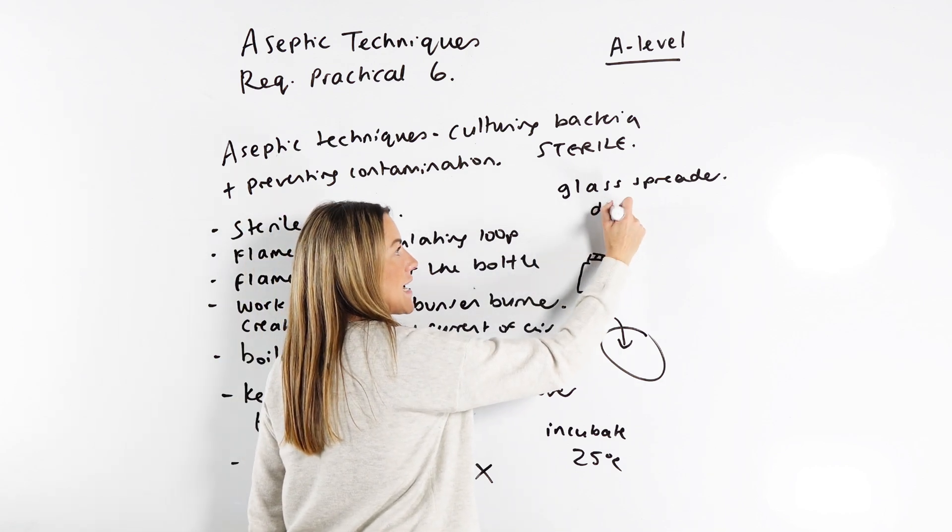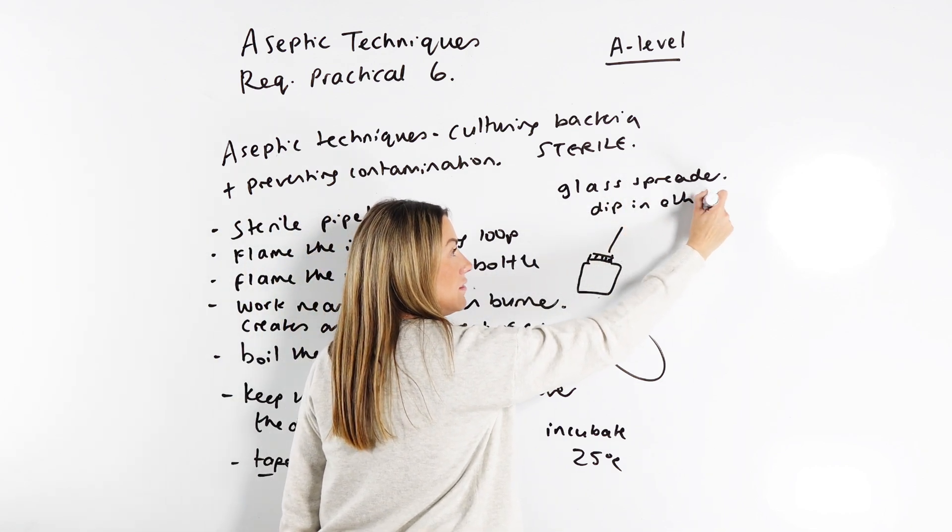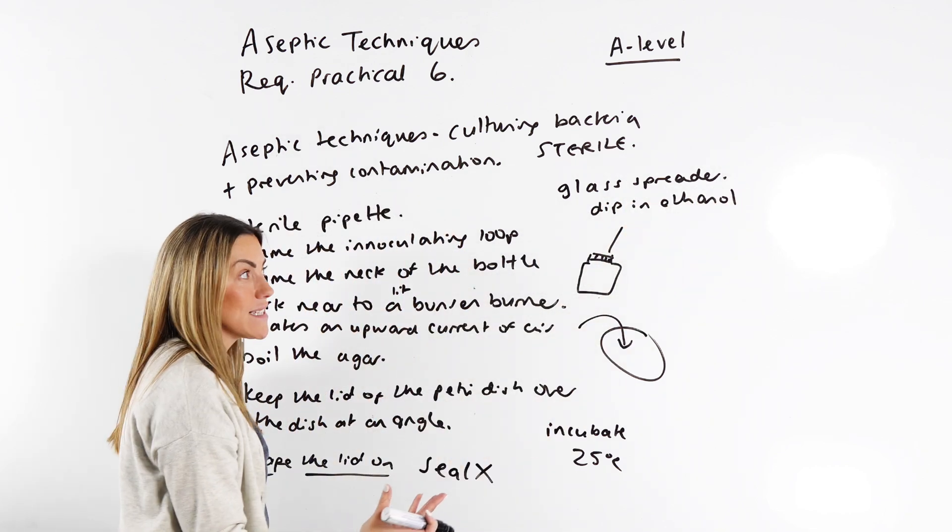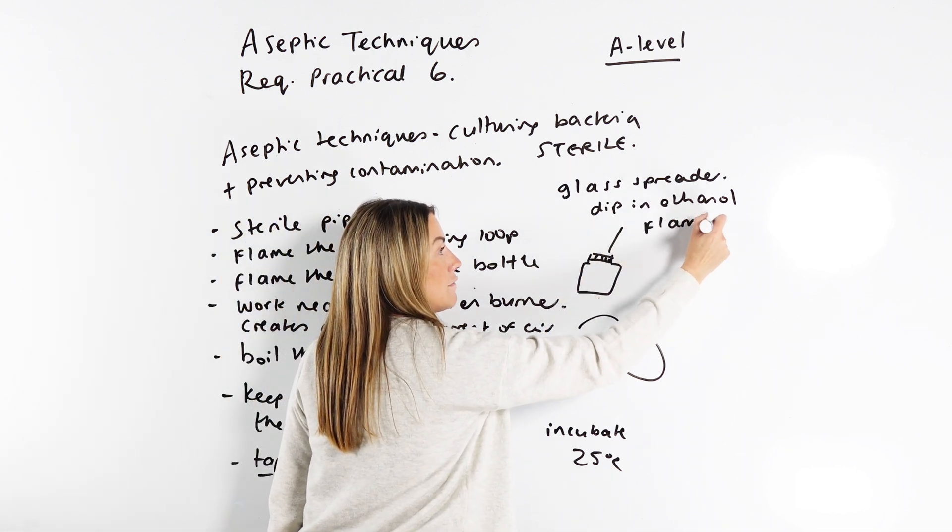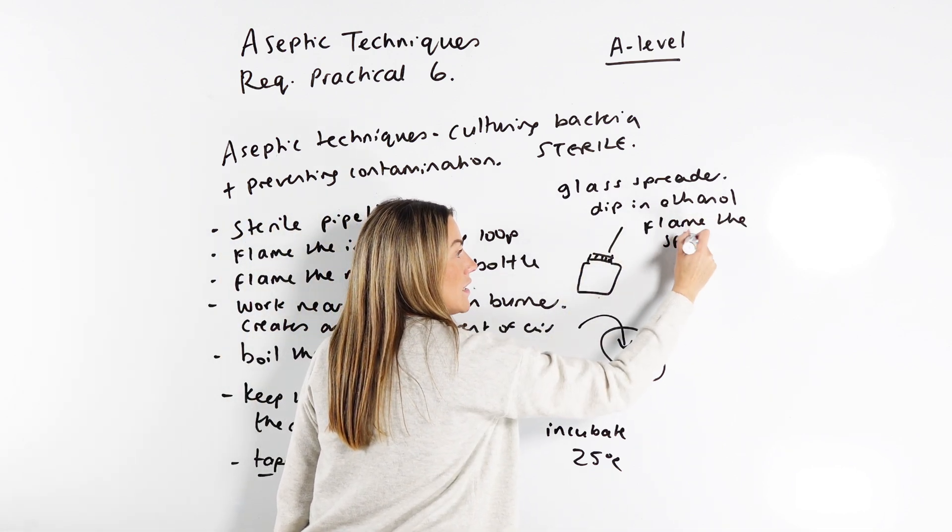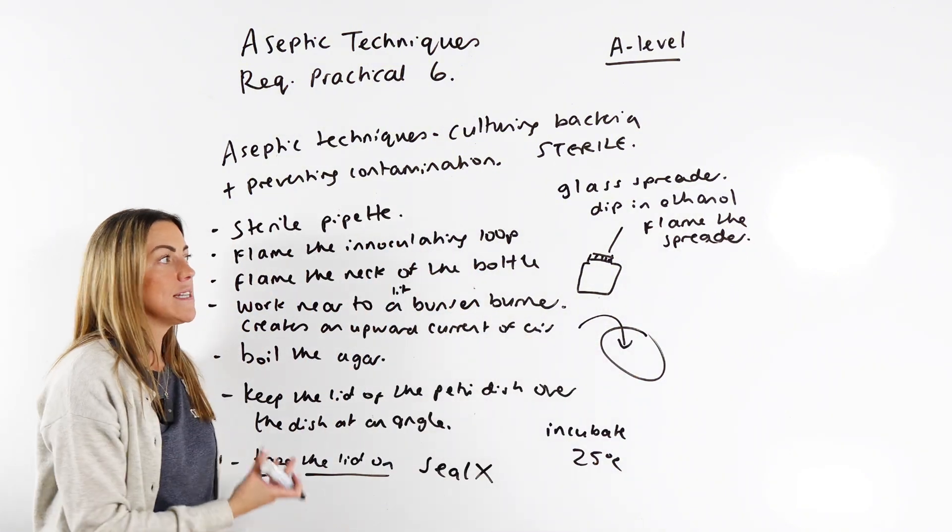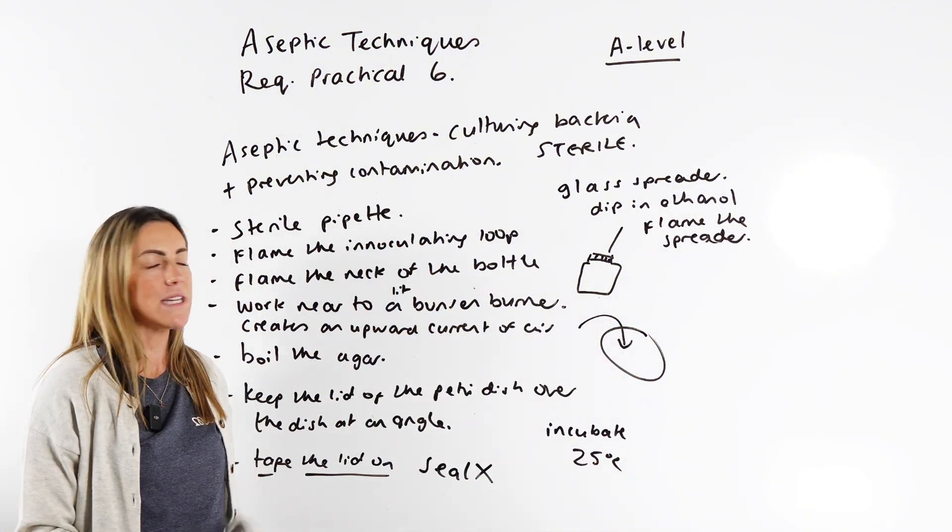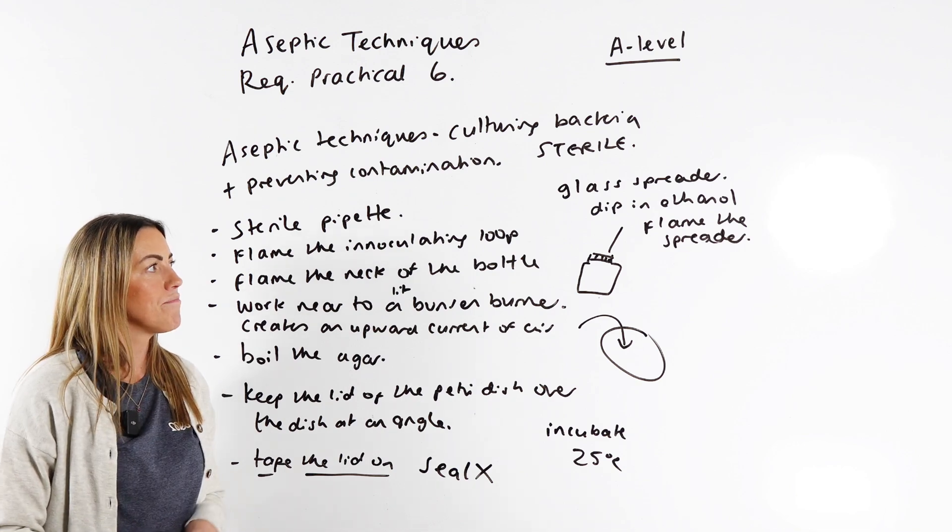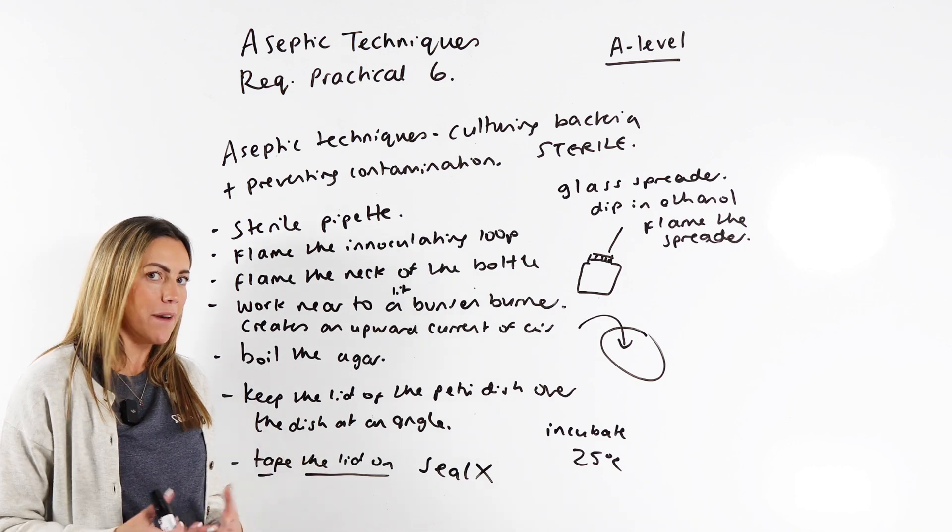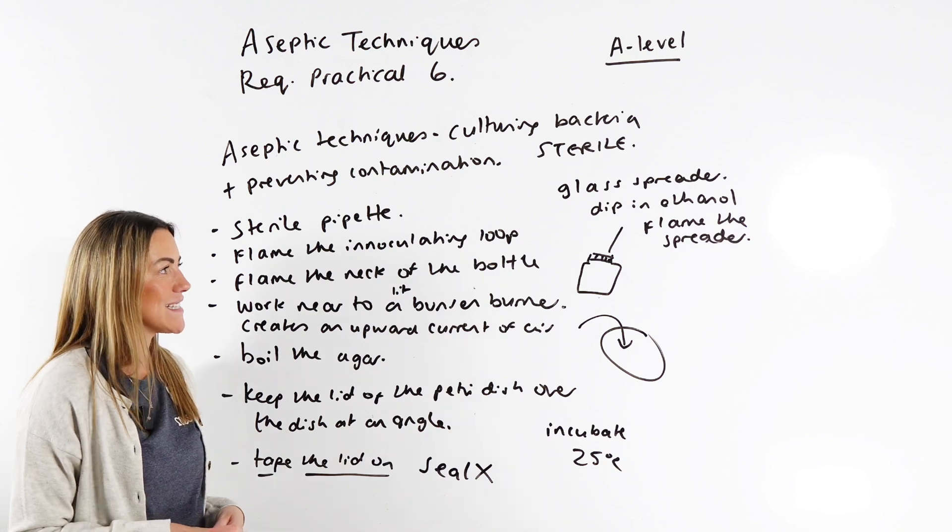So for this, you could say like dip in ethanol. That's another sterilization technique. Or again, flame the spreader. You might even have done both. You might have dipped it in ethanol to sterilize it and then flamed it as well to further sterilize it. I'm just trying to think of all the equipment and all the different ways to sterilize it here.